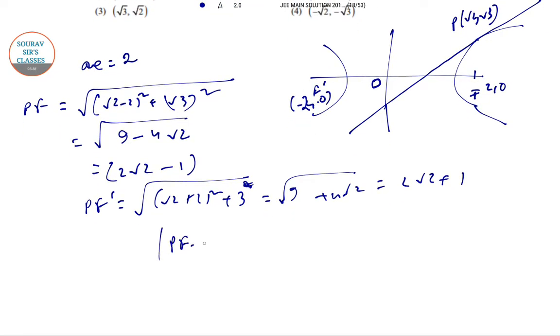pf dash minus pf is 2a equals 2. This makes a equal to 1 and ae equal to 2. We know e square in this case is 1 plus b square by a square. So b square, if we just put all the values, will be 3.